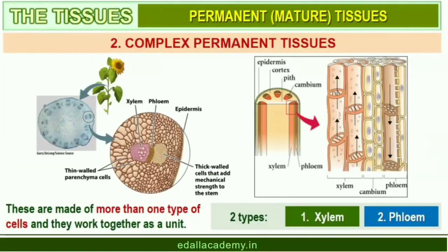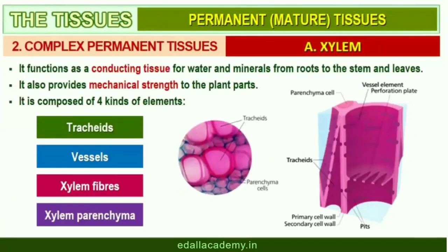Complex Tissues. The complex tissues are made of more than one type of cell and these work together as a unit. Xylem and phloem constitute the complex tissues in plants. Xylem functions as a conducting tissue for water and minerals from roots to the stem and leaves. It also provides mechanical strength to the plant parts.